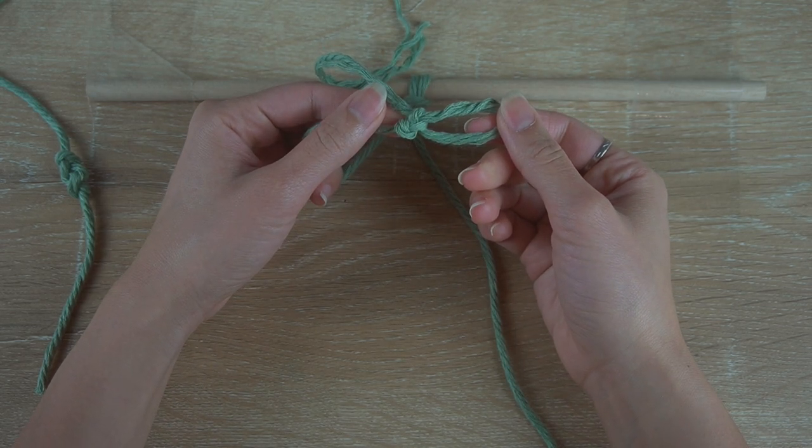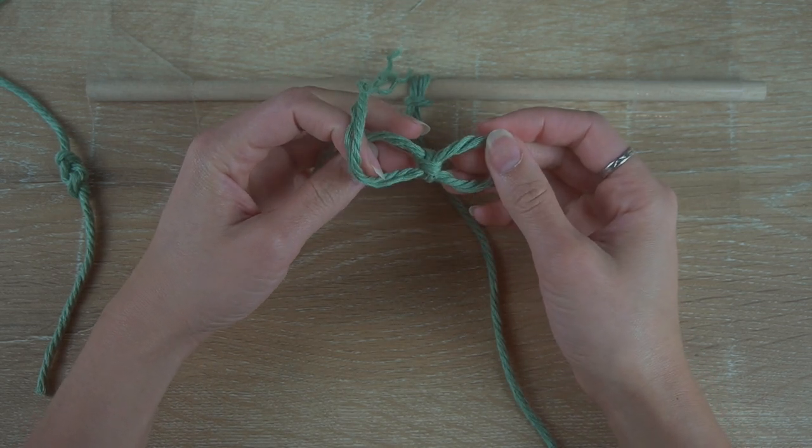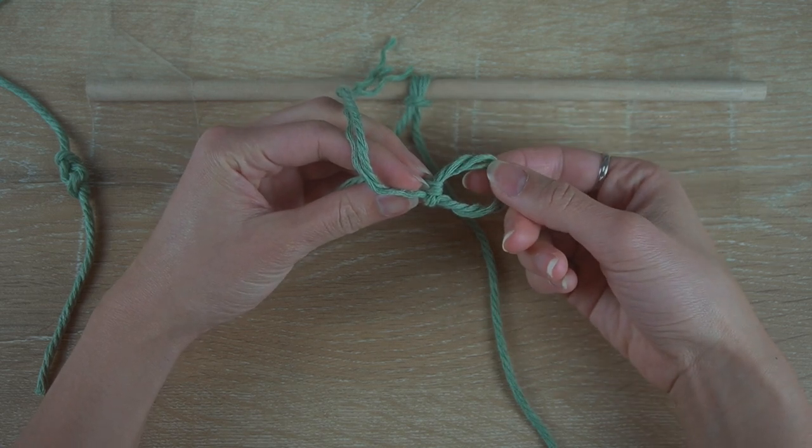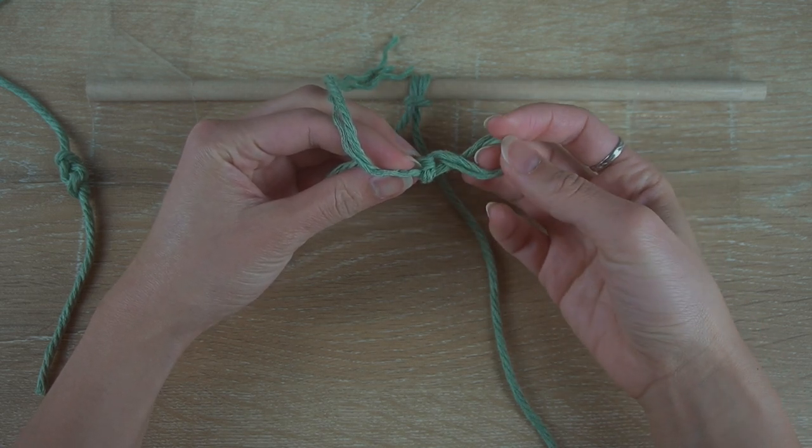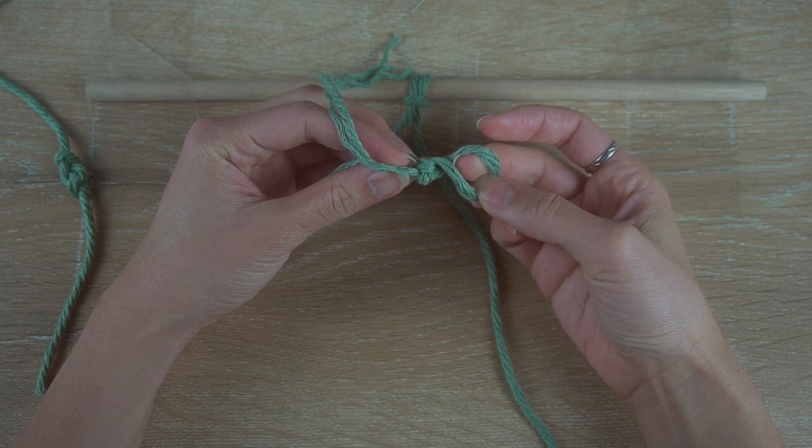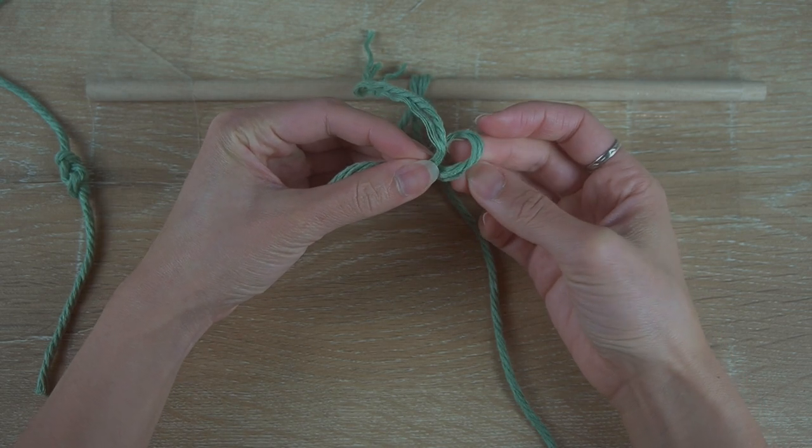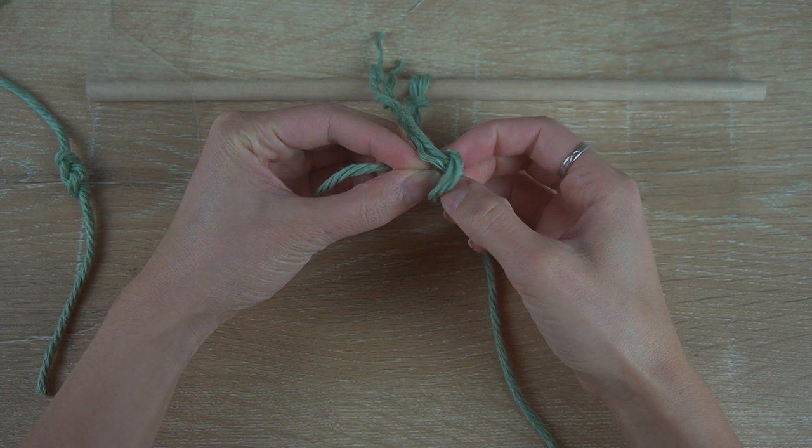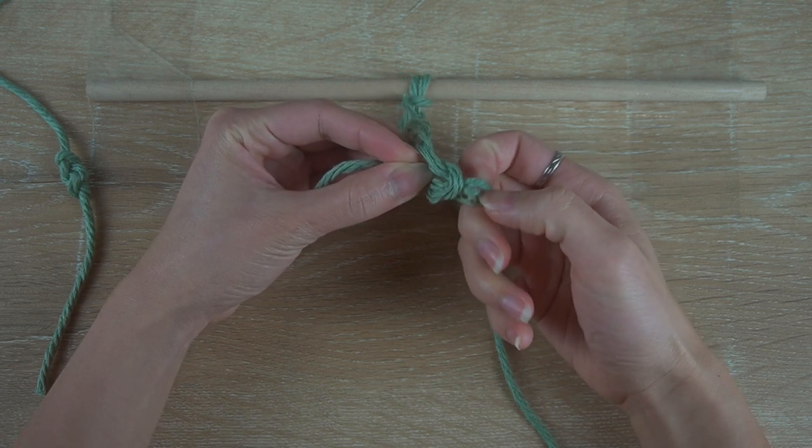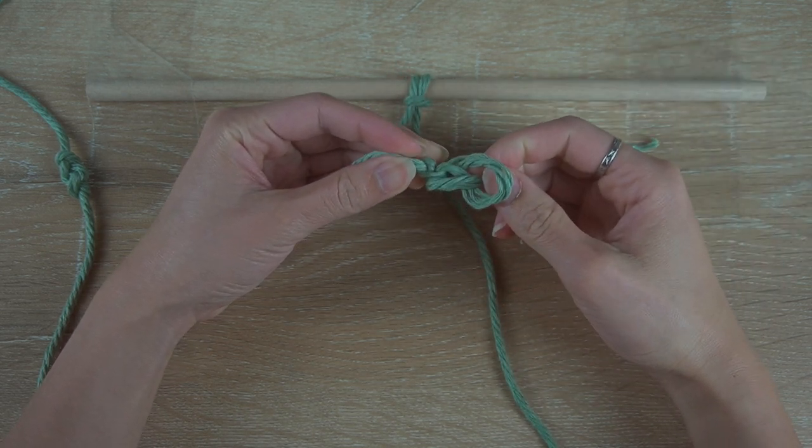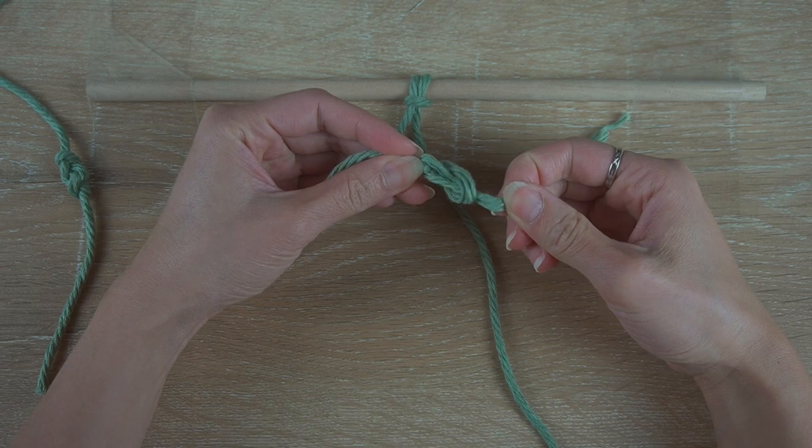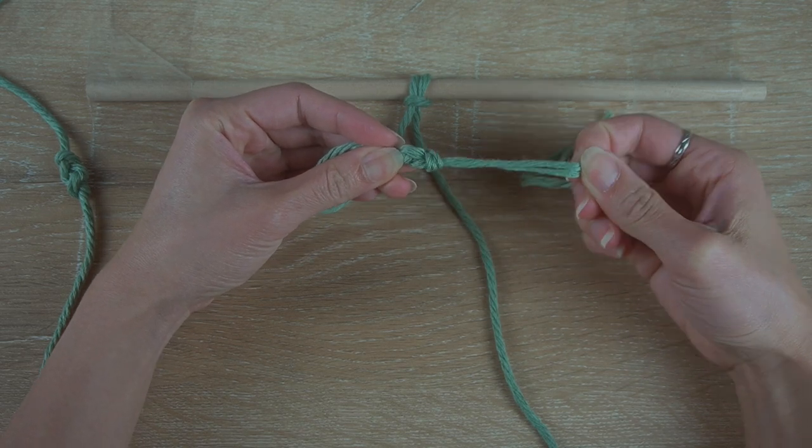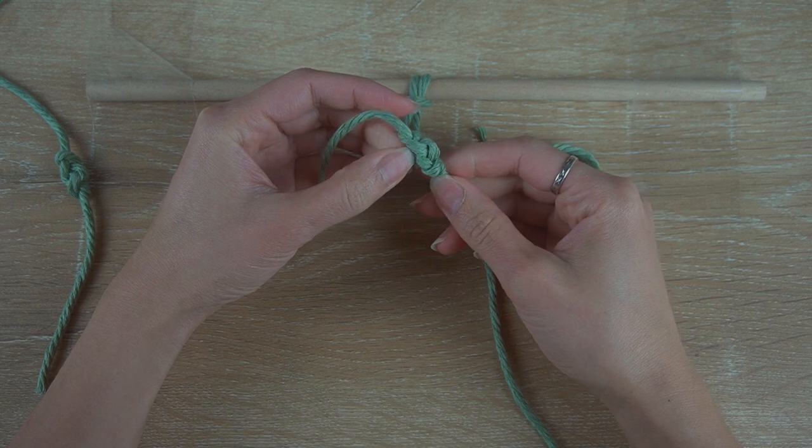Then turn the pattern upside down and form another loop with the right loop by twisting the loop. Then place the left cord end through that loop that we had just made. Pull on the cord end to tighten the knot.